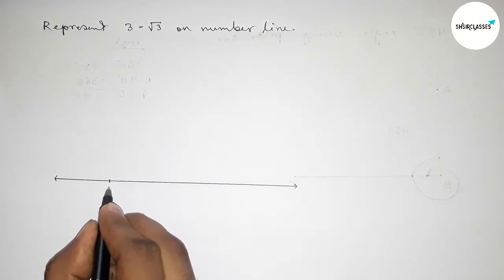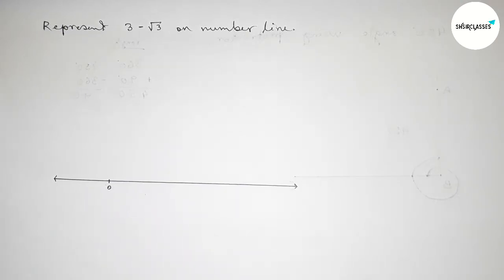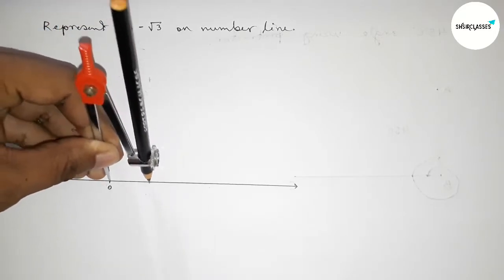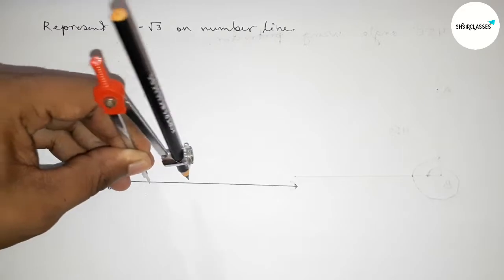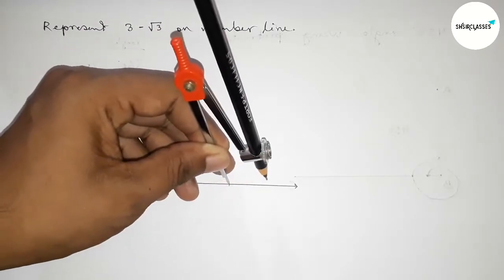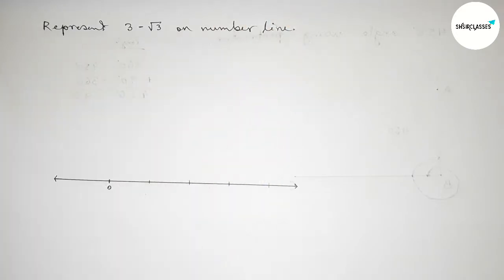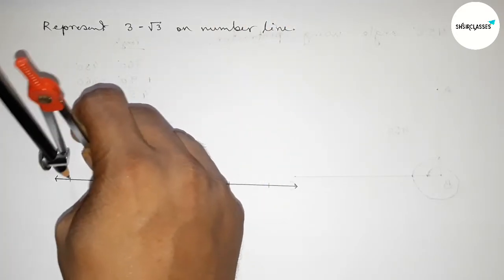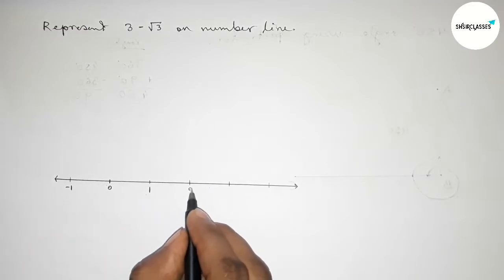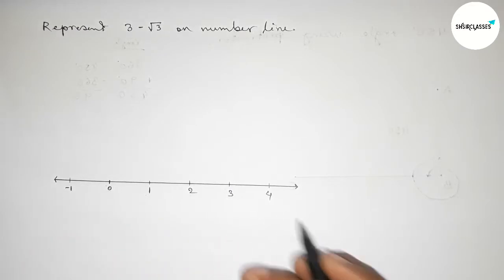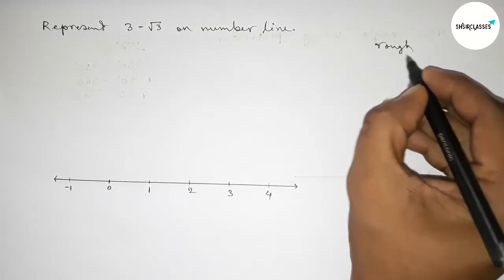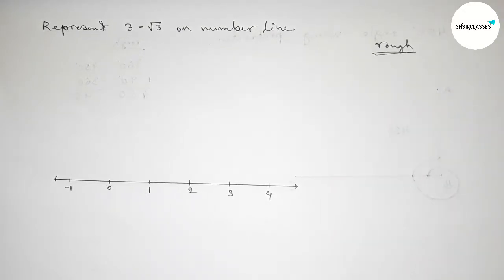Now taking here number zero. Next we have to mark the numbers on the line, so taking any length by compass and marking the numbers on the line by this way. The length of the compass is one unit length. So now here we mark minus 1, 1, 2, 3, 4.